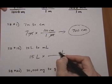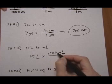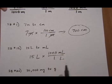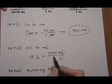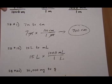There are one thousand milliliters in every one liter, because a milliliter is smaller than a liter. It takes more of it to equal one liter.